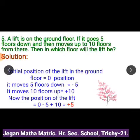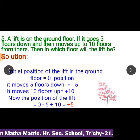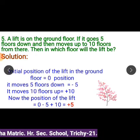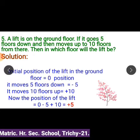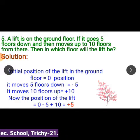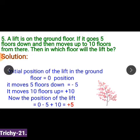Fifth sum: A lift is on the ground floor. It goes 5 floors down and then moves up 10 floors. In which floor will the lift be? The initial position of the lift is considered as 0, because the ground floor is represented by 0. The lift moving down means it moves in the negative direction, so 5 floors down equals minus 5.